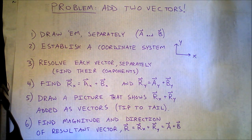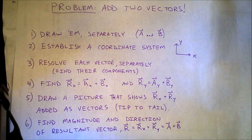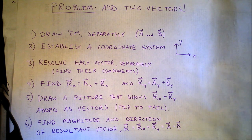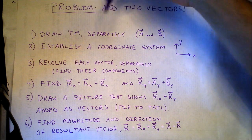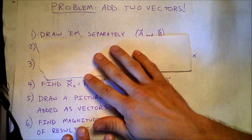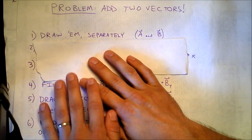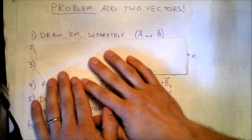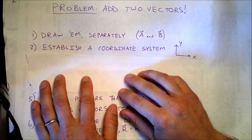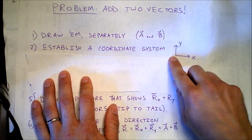Let's assume you're in the Australian Outback and a crazed, probably delusional man with not enough water comes to you and says he needs you to add two vectors. What you want to do is draw your vectors separately first so that you understand which way those vectors are going, and you name them A and B. Your second step is to establish a coordinate system.